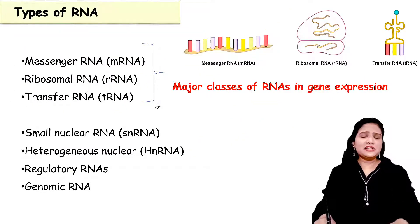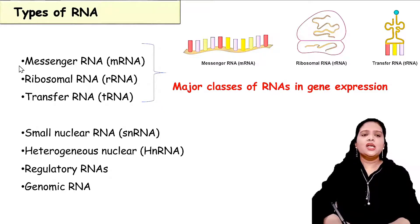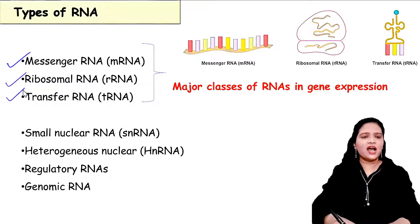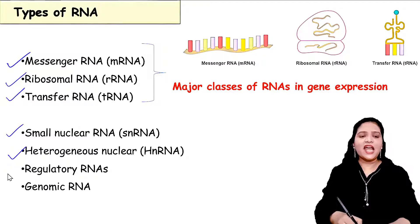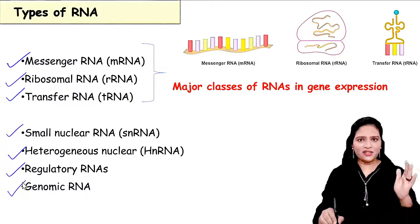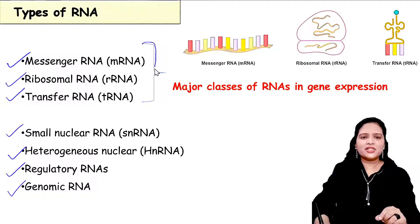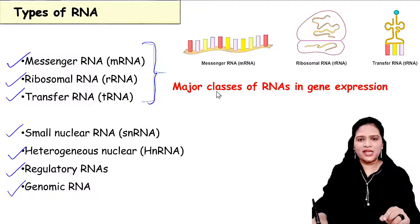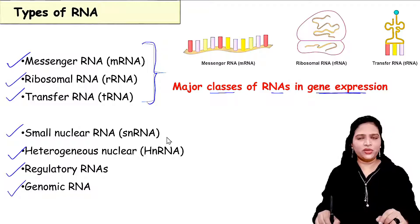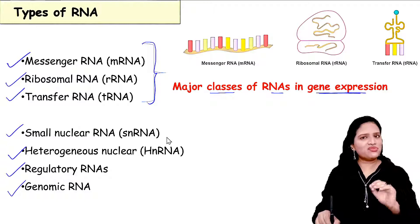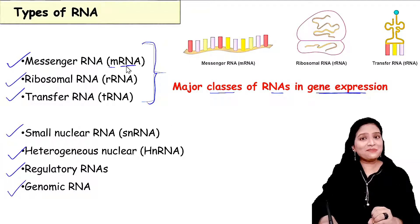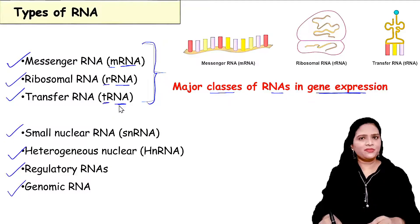Now let us see the different types of RNA. There are about six to seven types: messenger RNA, ribosomal RNA, transfer RNA, small nuclear RNA, heterogeneous nuclear RNA, regulatory RNA, and genomic RNA. In the syllabus, only three major types are covered, as these are the main classes involved in gene expression: messenger RNA (mRNA), ribosomal RNA (rRNA), and transfer RNA (tRNA). We will study the structure and function of these three types of RNA.